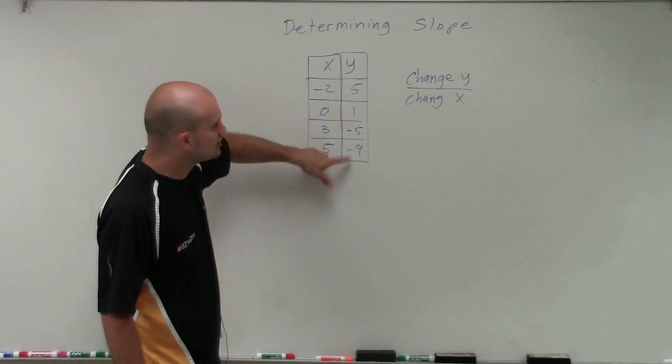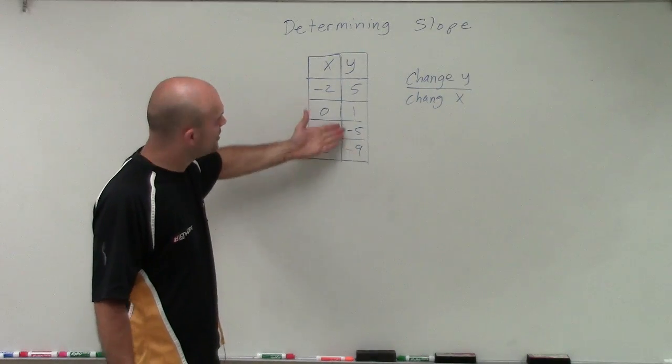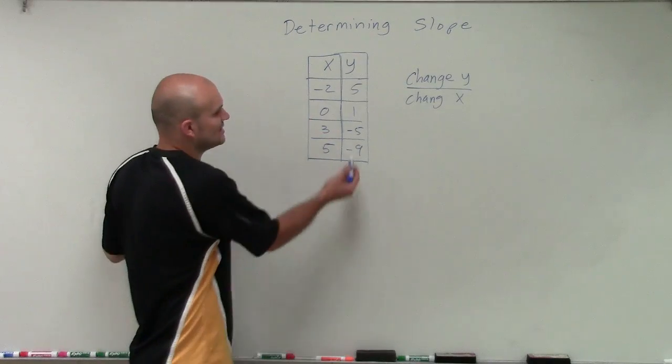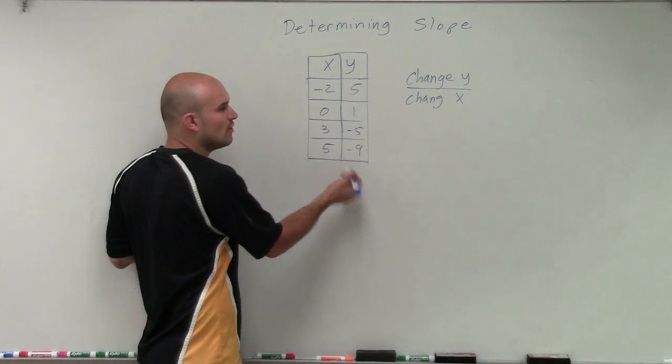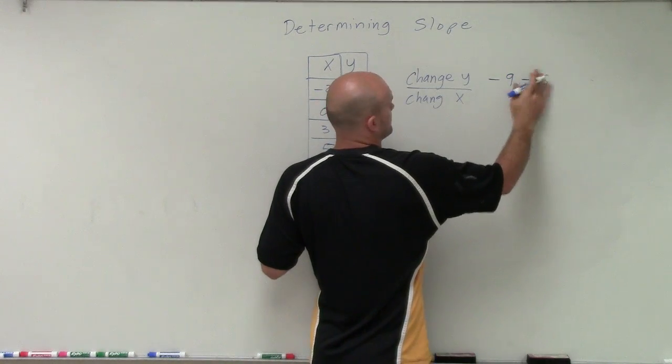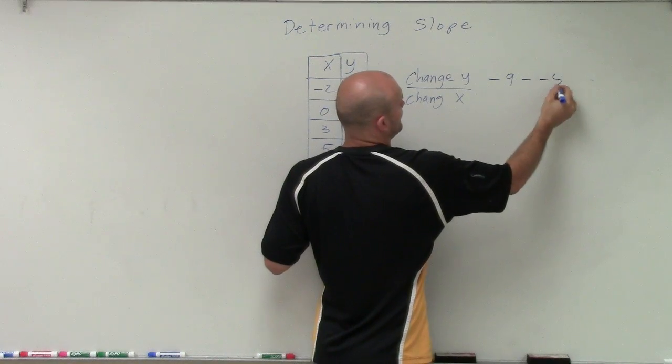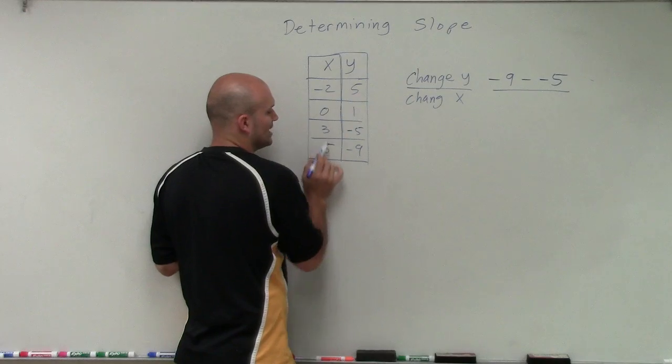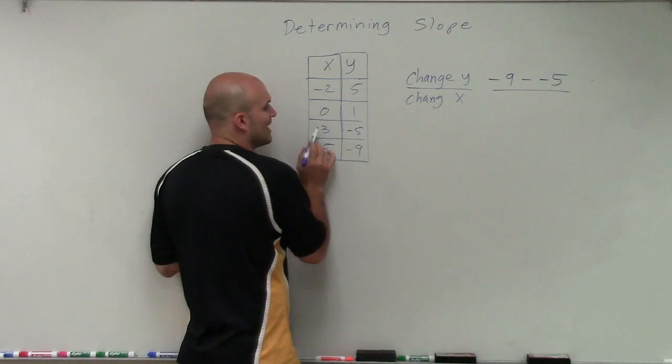If I look at my y-coordinates, what is the change between these two? You can see that the difference between these two is 4. But let's take a look at how we're going to write that. So I say negative 9 minus negative 5 over, and then the change in the x-coordinates, which would be 5 minus 3.